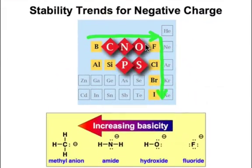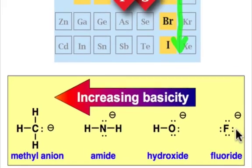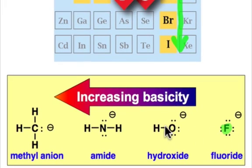We can use these trends to explain the basicity of the anions shown here. In each case, an element in the second row carries the negative charge, and going from carbon to fluorine, stability of that negative charge will increase.